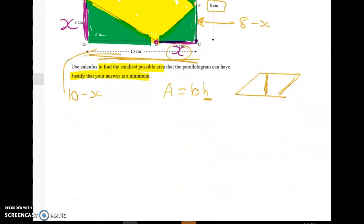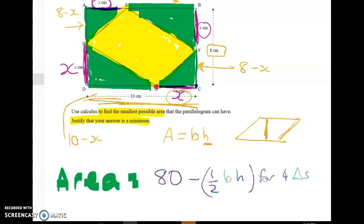Okay so what do I know? The area is equal to 80 the area of the rectangle minus well it's half the base times height for the four triangles. Let's start with this triangle here. This one here that I've just erased. Well we know the height is 8 minus x and we know the base is x so the area of that triangle is half of x times 8 minus x and this triangle up here has got the same dimensions. Okay so let's put those two in first.